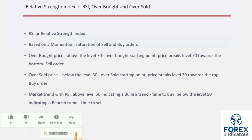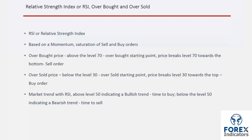Overbought is the time when there is an abundance of buy orders on a symbol and a considerable number of traders are closing their buy orders. Overbought occurs when a trend in RSI passes level 70 towards the top. Whenever price crosses level 70 towards the bottom, a sell order would be beneficial.